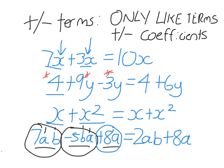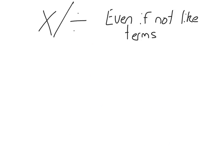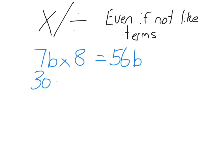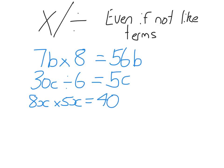Let's go on to multiplying and dividing. I can multiply and divide terms even if they're not like terms. So if I have 7B times 8 — even though 8 and 7B are not like terms, I can multiply them. 8 times 7 is 56, and then I write the letter B. So again, we're just multiplying and dividing coefficients. 30C divided by 6: 30 divided by 6 is 5, and I write the letter. Sometimes you might have to multiply the same letter more than once — like 8X times 5X: 8 times 5 is 40, but there are 2 X's being multiplied, so we write X squared.